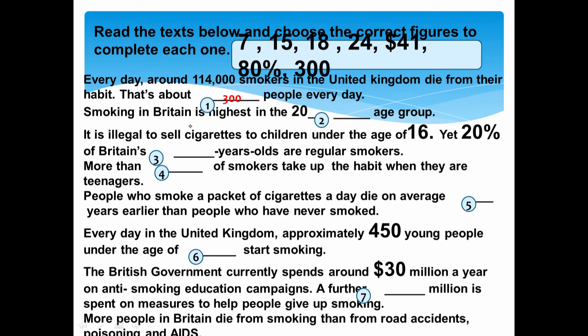Smoking in Britain is highest — أعلى شيء — in the 20s. Then we have age group — الفئة العمرية. فالرقم المقارب لـ 20 هو 24. So we have the 20 to 24 age group. It is illegal — غير قانوني — to sell cigarettes to children under the age of — طبعاً السن القانوني هو 18، فتحت السن القانوني إذن نختار الرقم 16.